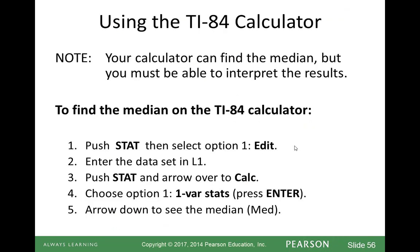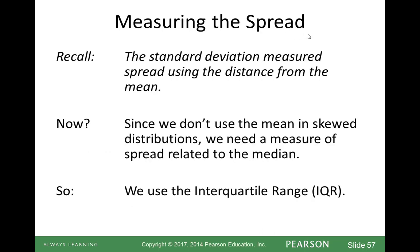To use your calculator: put the data in a list, do the one variable statistics, and go down to where it says median. Now let's talk about measuring the spread. Standard deviation measures spread using the distance from the mean, but it doesn't work well for skewed distributions. So we use the interquartile range, or IQR.